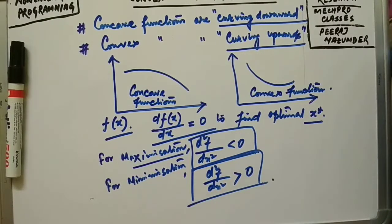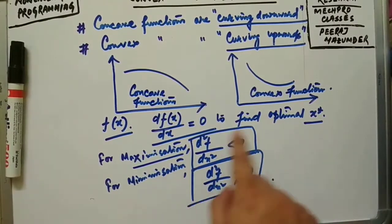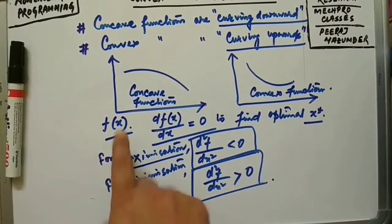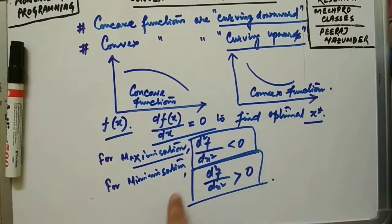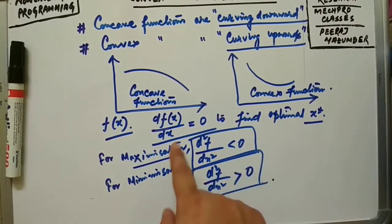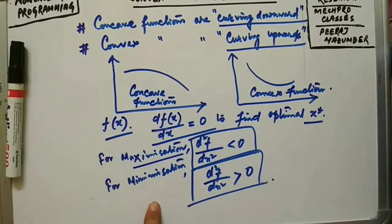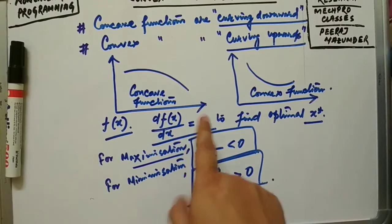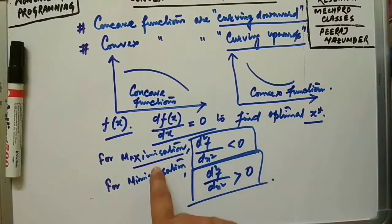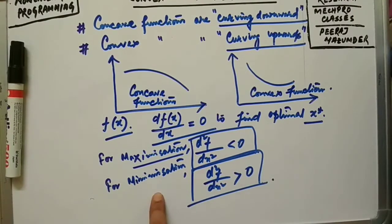If you need to find the maximum or minimum of a given function — as you have done in engineering mathematics or class 11 and 12 mathematics — you simply differentiate, set that derivative to zero, and then check the double derivative: if it is less than zero, it is a maximization; if greater than zero, it is a minimization.